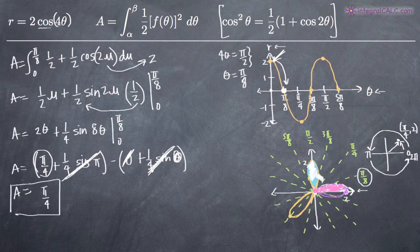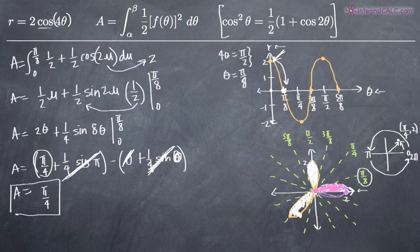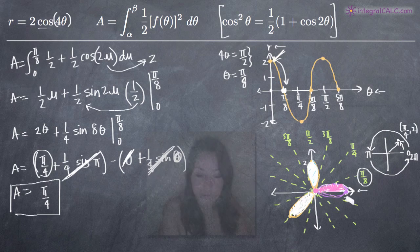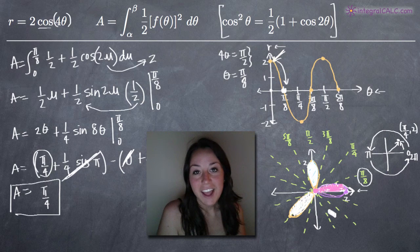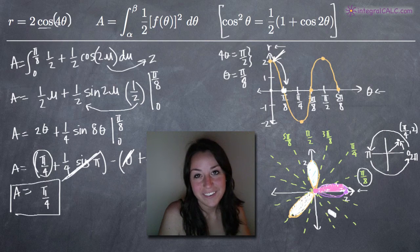The blue area shown — the area of that loop — is pi over four. In fact, all eight loops of this eight-looped flower are the same size, so the area of each one is pi over four. That's it — I hope this video helped, and I'll see you in the next one.